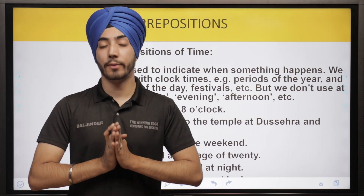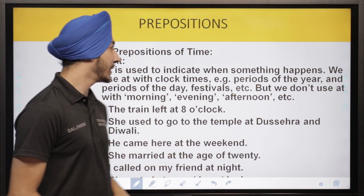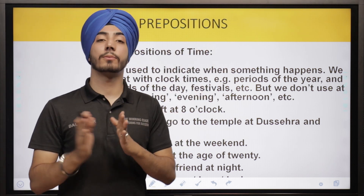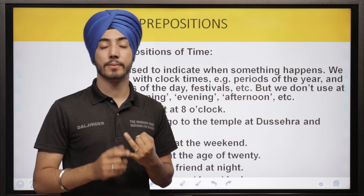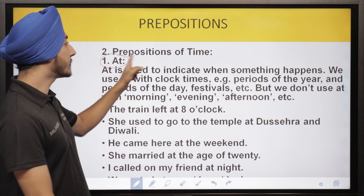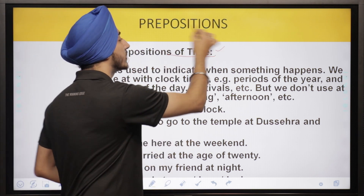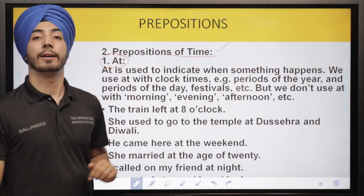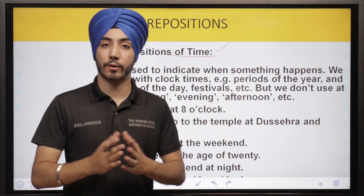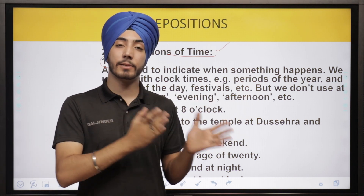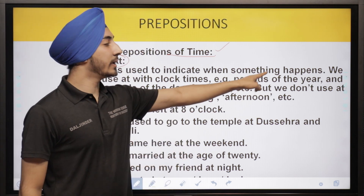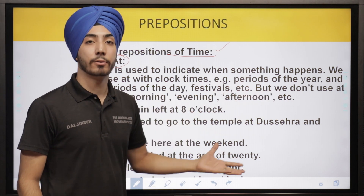The first preposition we are going to study is 'at,' which comes under the category of preposition of time. There is preposition for time, preposition for place, and preposition for direction. The first one we study is preposition of time. 'At' is used to indicate when something happens — what time did an event happen.